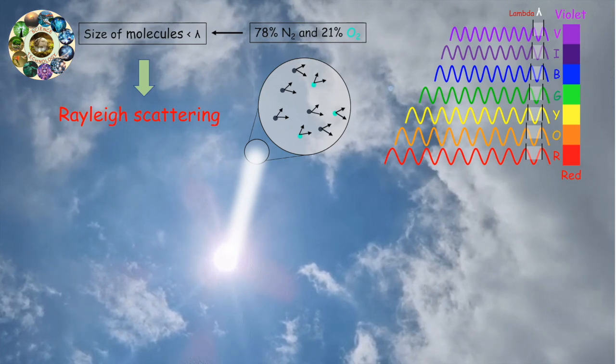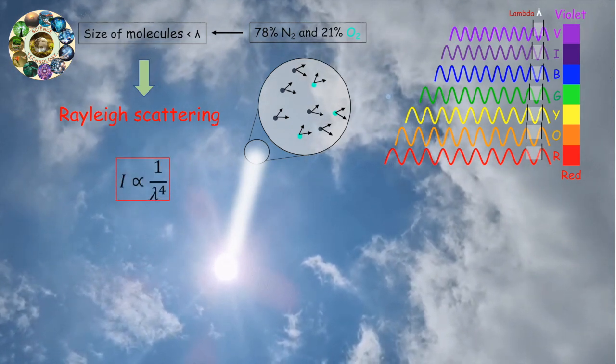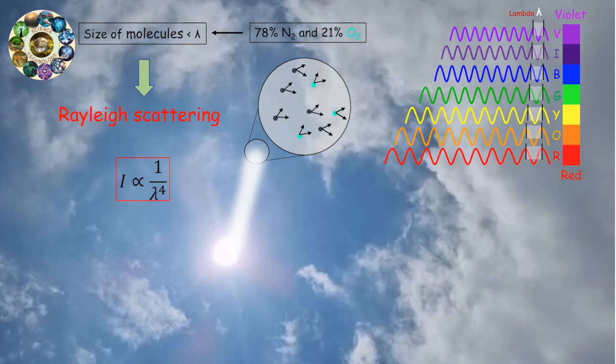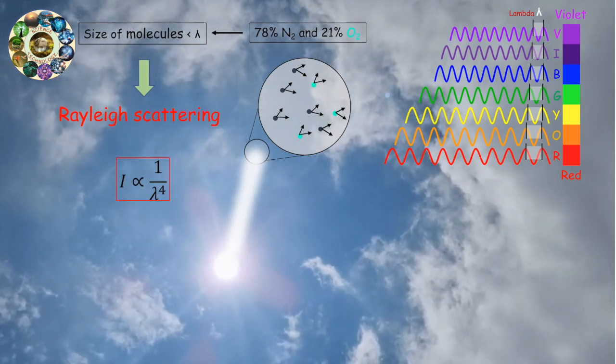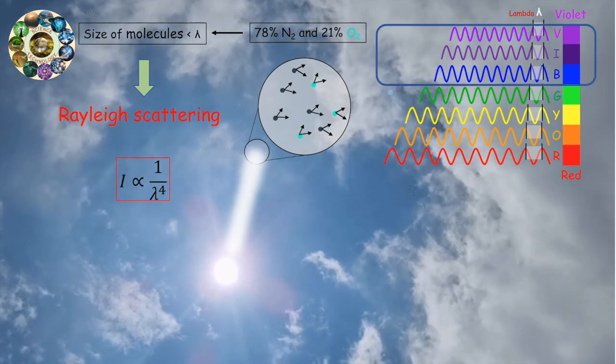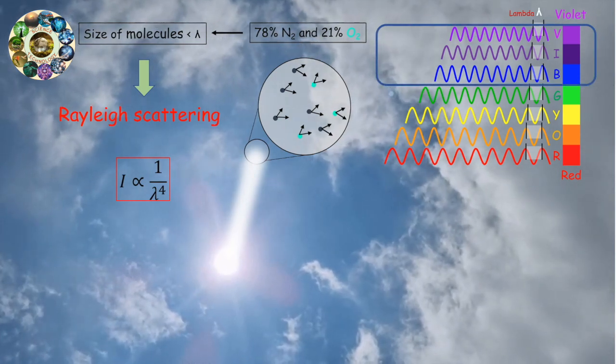According to Rayleigh scattering, the intensity of sunlight in the atmosphere scattered by molecules of the constituent gases varies inversely as the fourth power of the wavelength. Hence, short wavelength of the visible spectrum will be scattered much more strongly than will the long wavelength.